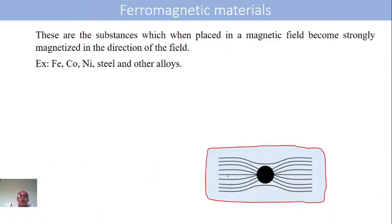Finally, coming to the ferromagnetic materials — the third and last type of magnetic material. These are substances which, when kept in a magnetic field, become strongly magnetized in the direction of the magnetic field. More magnetic lines of force pass through the specimen compared to the other two types, and it moves from weaker field to stronger field very quickly. The substances exhibiting this property are iron, cobalt, nickel, steel, and their alloys.